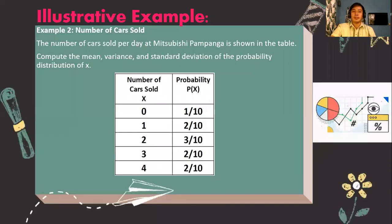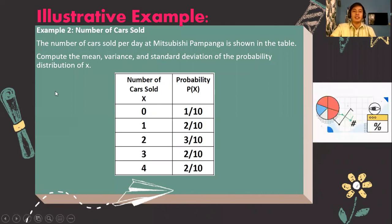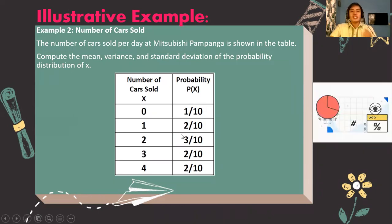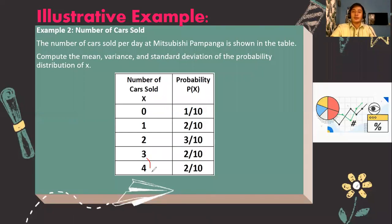Let's have another illustrative example. The number of cars sold per day at Mitsubishi Pampanga is shown in the table. Compute the mean, variance, and standard deviation of the probability distribution of the random variable x. We let x be the number of cars sold: 0, 1, 2, 3, or 4, with corresponding probabilities 1/10, 2/10, 3/10, 2/10, and 2/10 respectively.